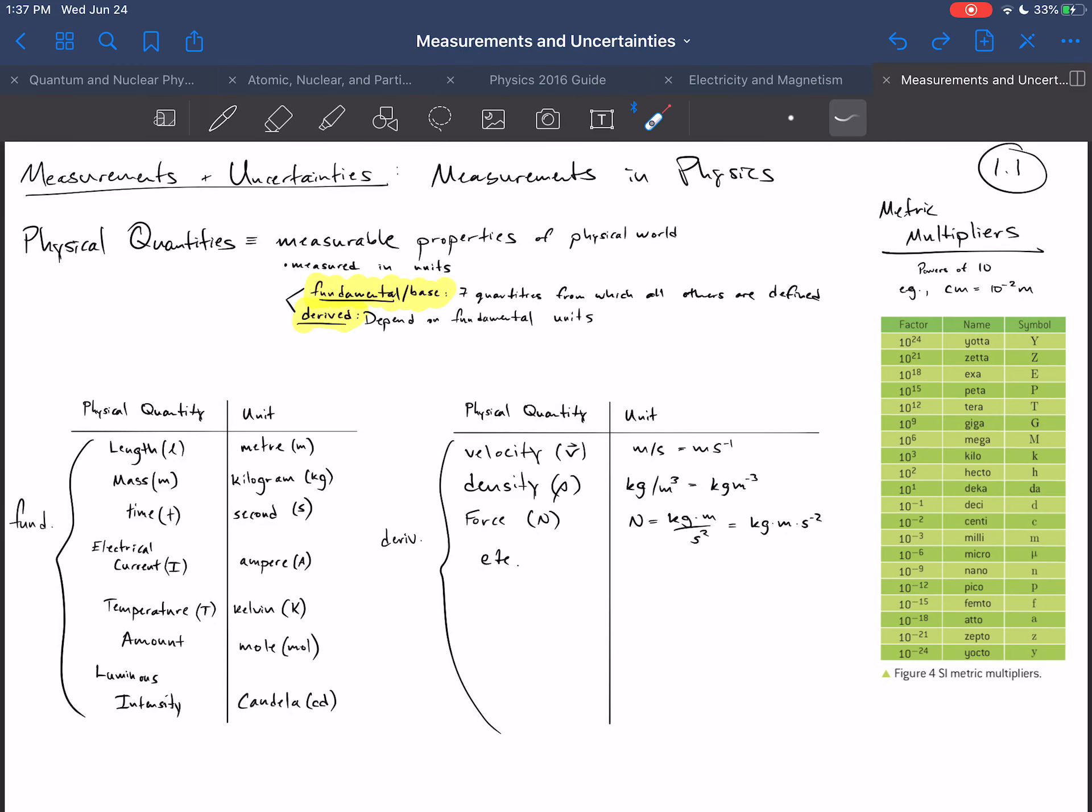In the last video, we discussed the idea of there being physical quantities, which are measurable properties of the physical world. They are measured in units. Those physical quantities come in two kinds, fundamental and derived, and each quantity is accompanied by a symbol and a unit, and that unit has a symbol as well.